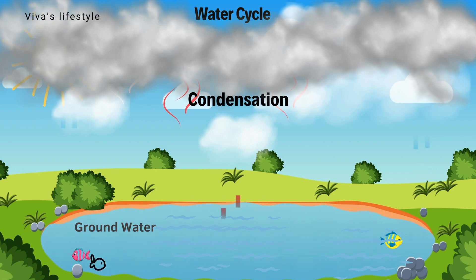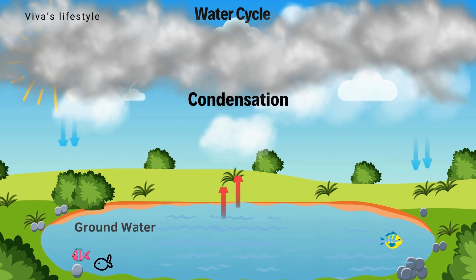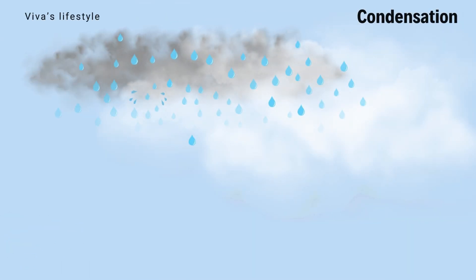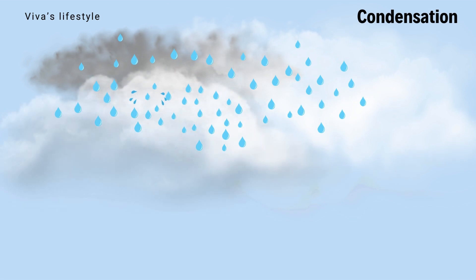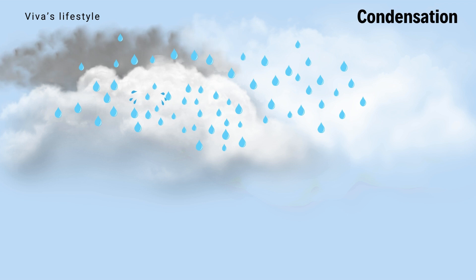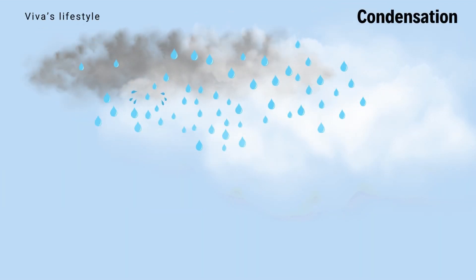With increased altitude, both temperature and pressure decrease, which leads to water vapor transforming into water droplets. This phase is called condensation. Millions of tiny water droplets accumulate in a large area and form clouds due to drops in atmospheric pressure and temperature.